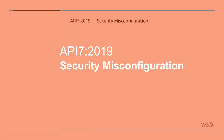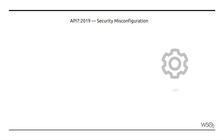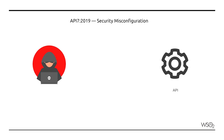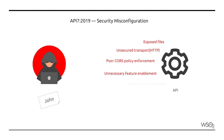Security Misconfiguration. Shortcomings in the API implementation and how the API server itself is configured could expose security vulnerabilities that can be exploited. Exposed files, security vulnerabilities, and unnecessary feature enablement at the server level could enable attackers to gain control of the API server itself. Security can be further compromised by the use of unsecured transport, poor CORS policy enforcement, and verbose error messages which leak internal information.